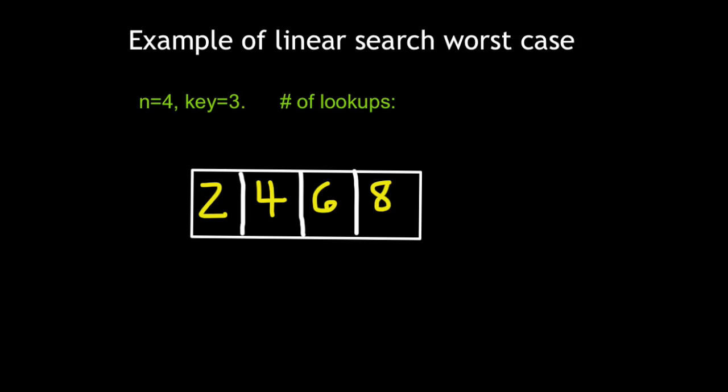So now we're going to see how many lookups linear search makes in the worst case. So here we're looking at a list of size 4. We're looking for the value of 3 in this list. We're going to count the number of lookups we make. First, we look at the initial position. 2 is there. That is not equal to our key. So we made one lookup. We look at the next one. Key's not there. Another one. Key's not there. Another one. Key's not there. So, our list was size 4 and we made 4 lookups, which is consistent with our finding that linear search runs at O of n.